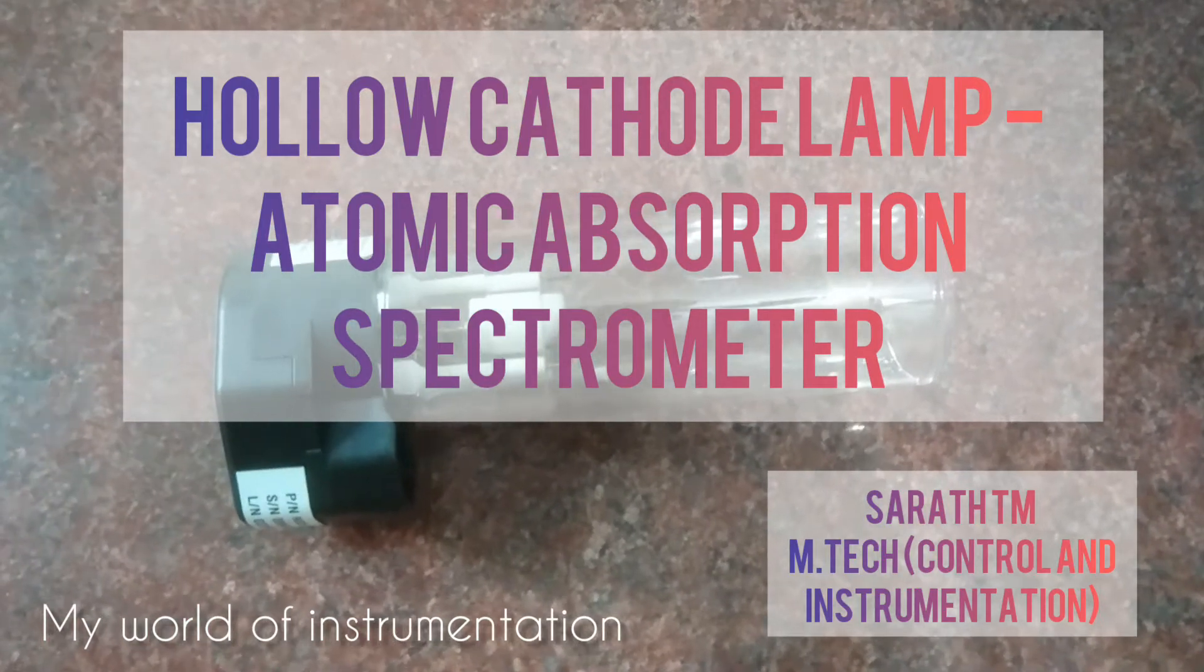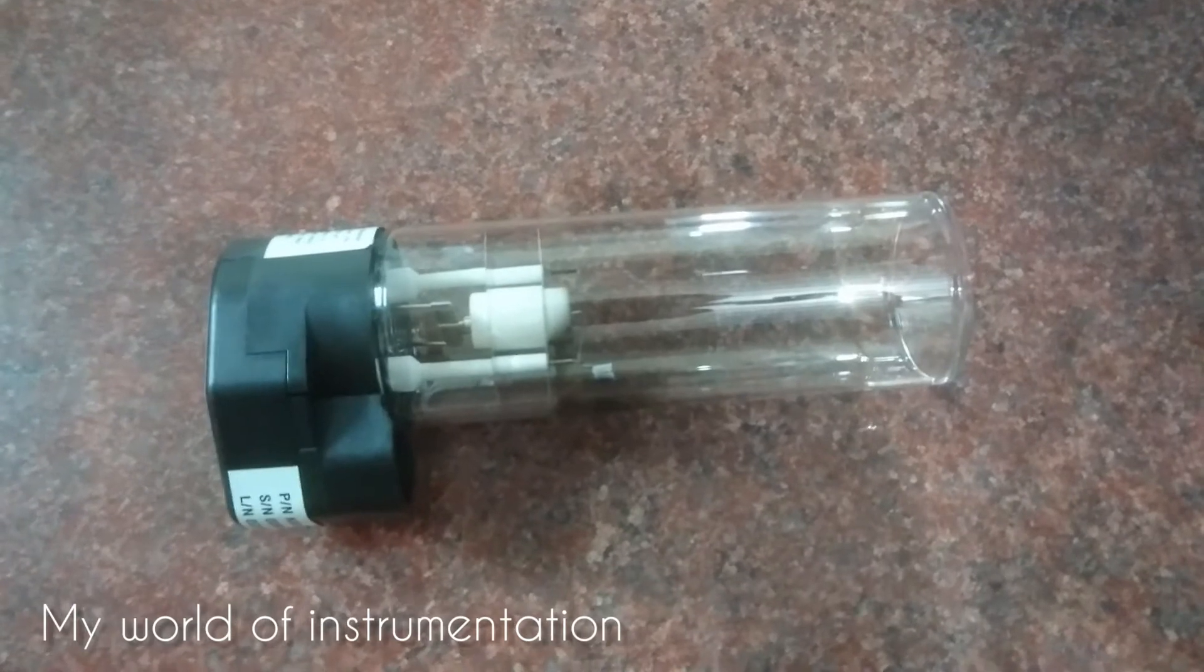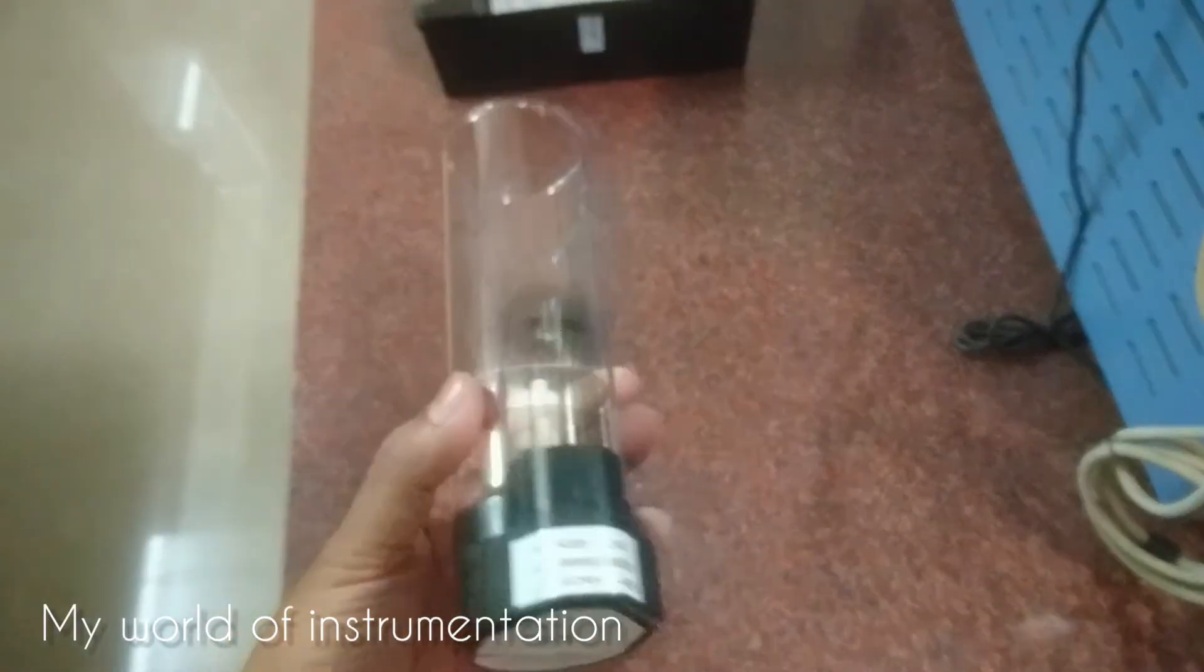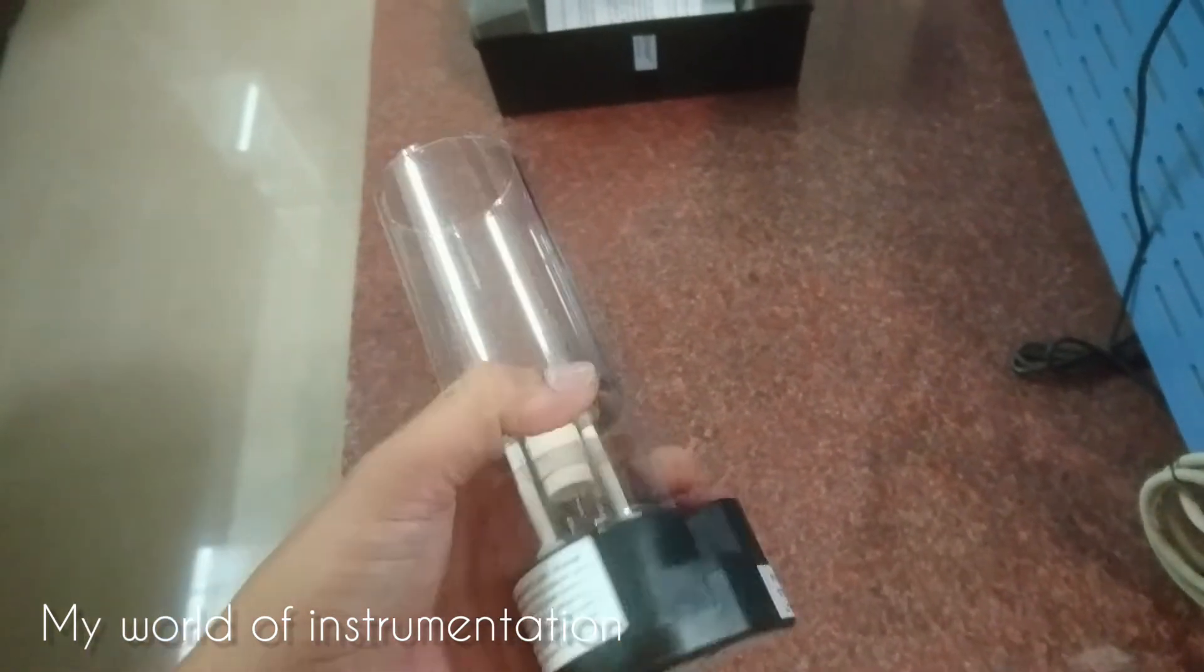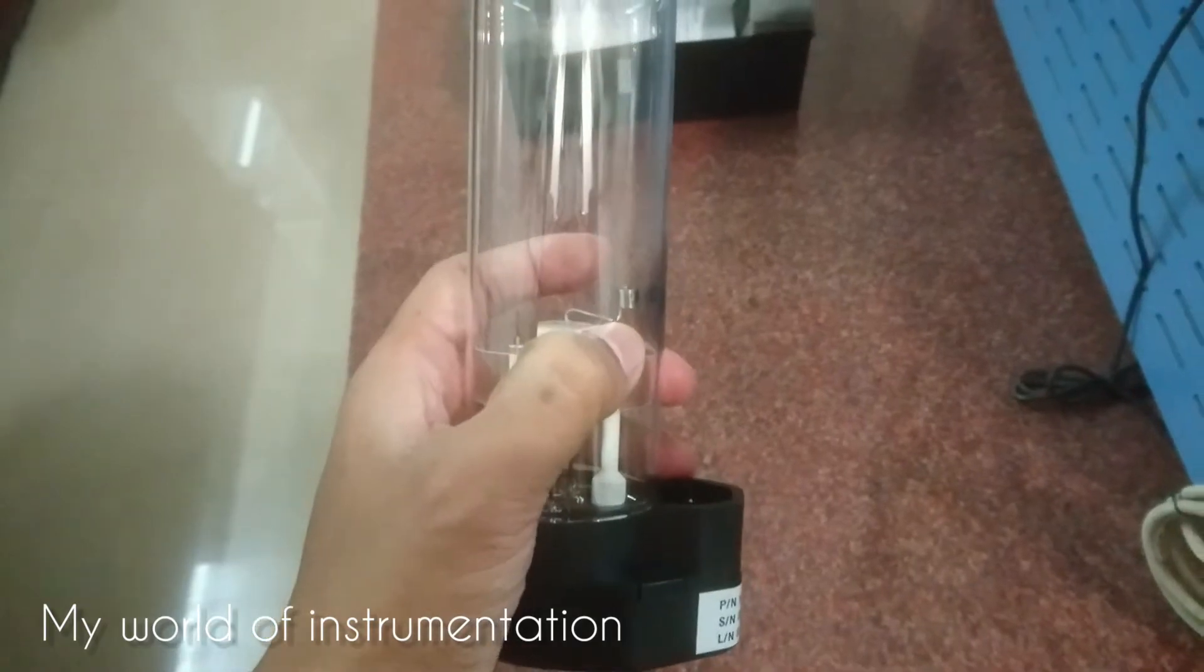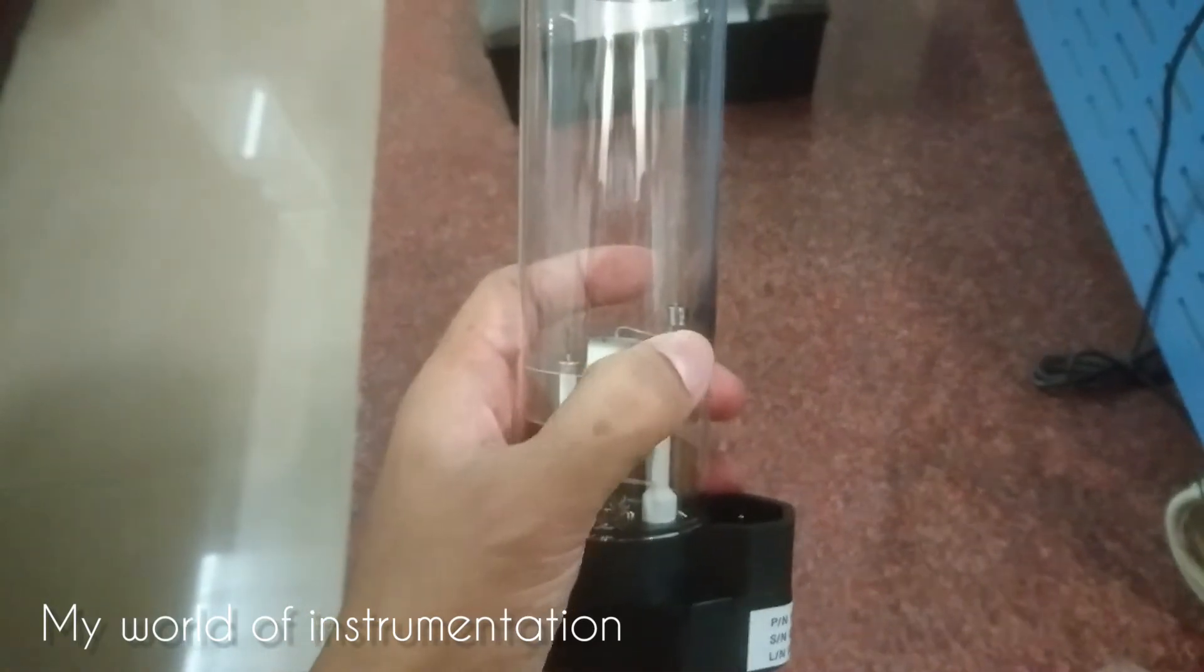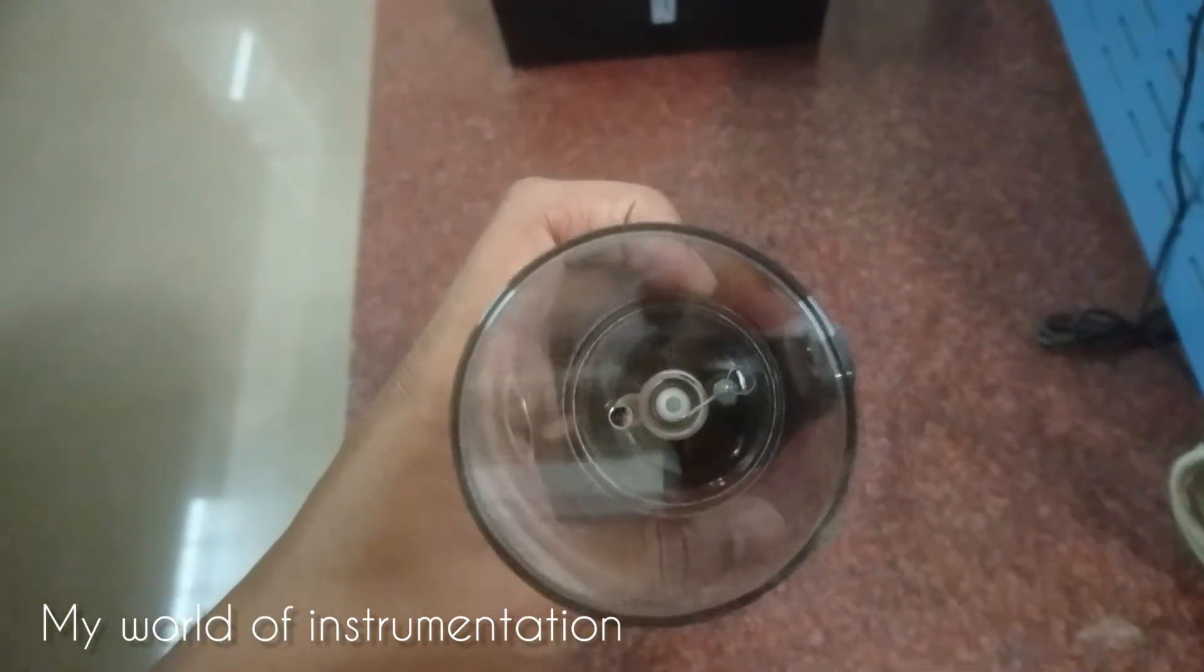Hi, in this video we are going to see the hollow cathode lamp used in atomic absorption spectrometer as a radiation source. This is a hollow cathode lamp for element magnesium, and in this hollow cathode lamp there is a tungsten anode and a cylindrical hollow cathode.